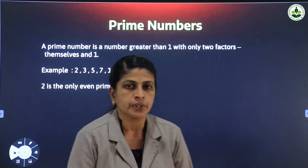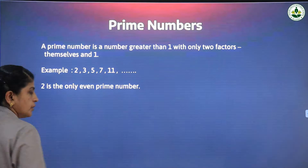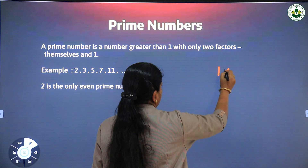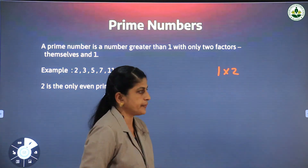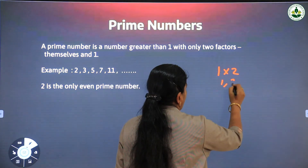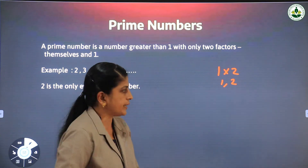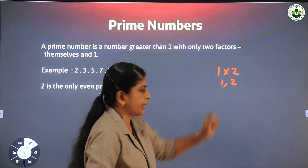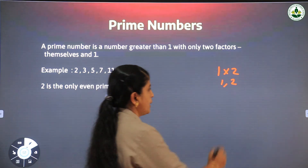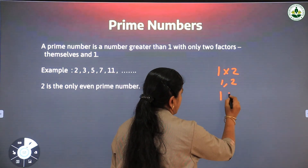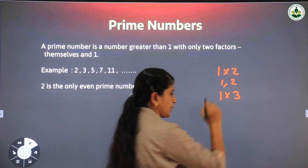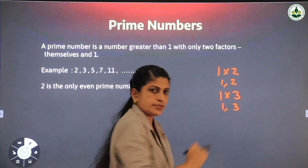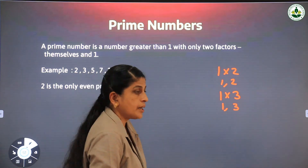For example, take 2. What are the factors of 2? 2 can be written as 1 × 2. That means 1 and 2 are the factors of 2, and it has only these two factors. Therefore 2 is a prime number. What about 3? 3 can also be written as 1 × 3, so 1 and 3 are the factors. Therefore 3 is a prime number.